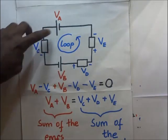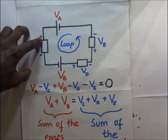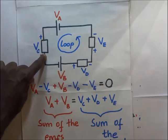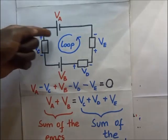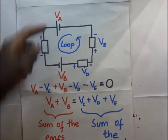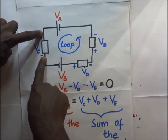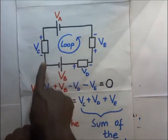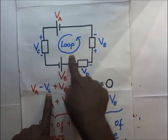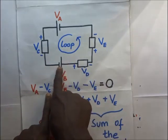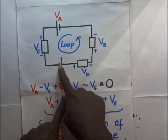Then we come to this resistor. The direction of current is moving in that direction, so this side of the resistor has a higher potential and this side has a lower potential. Since our loop is traversing in the same direction, it will experience a voltage drop across this resistor, giving us a negative voltage here. Then as our loop traverses further, the direction of the loop coincides with the direction of flow of current through cell B — current moving from negative to positive inside the cell — so that makes it a positive voltage VB.